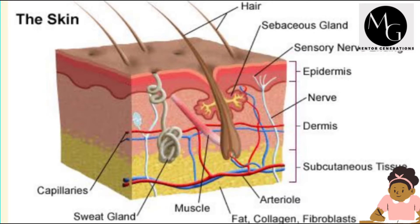The diagram of the skin shows it has several layers. There are two major layers: the epidermis, which is the upper layer, and the dermis, along with other structures.